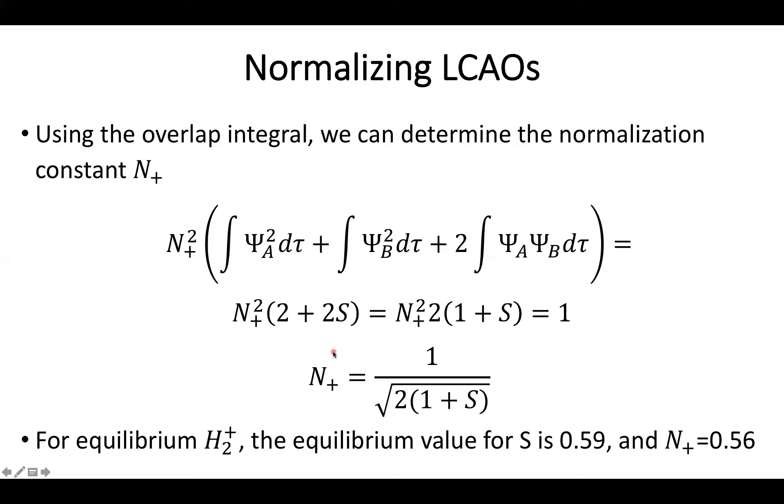So what this roughly means is that each of these individual wave functions will have about a contribution of half what they originally would have. And you can also figure out roughly the contribution of the overlap as well. So using this, you can figure out a lot about how much of the density is in any of these three regions, which again is a pretty cool feature.